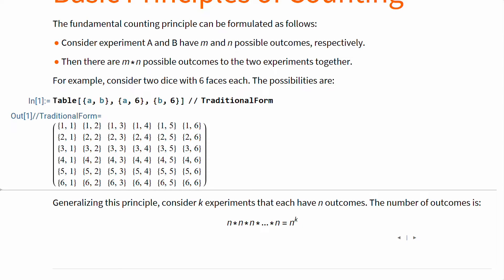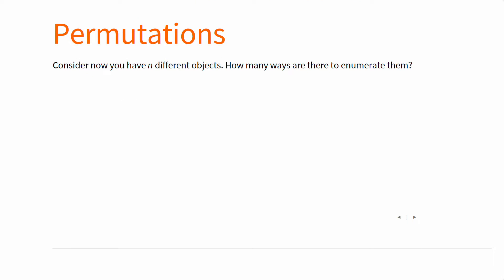Counting simultaneous experiments is now solved. Let's move on to sequential experiments. How many ways are there to enumerate n different objects?